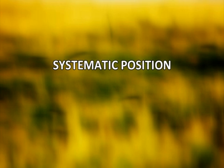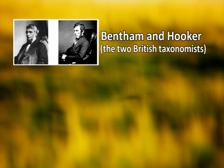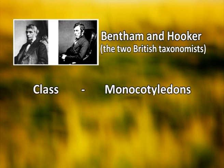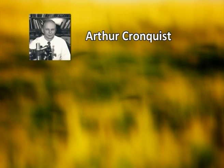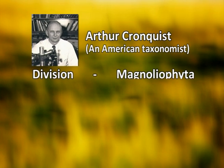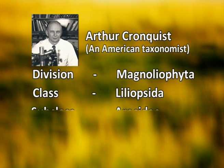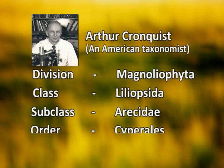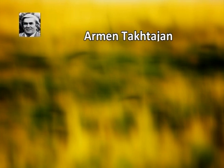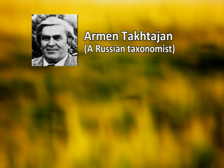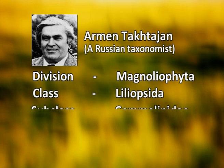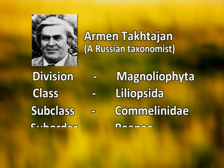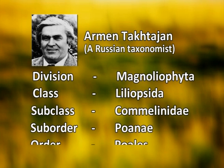The second part of the lecture is the systematic position of Poaceae. Two British taxonomists, Bentham and Hooker, classified Poaceae under the class Monocotyledon and under the series Glumaceae. Later, Cronquist, an American taxonomist, ranked it at the division Magnoliophyta, class Liliopsida, subclass Arecidae, and the order Cyperales. A Russian taxonomist, Armen Takhtajan, ranked it at the division Magnoliophyta, class Liliopsida, subclass Commelinidae, super order Poaenae, and the order Poales.